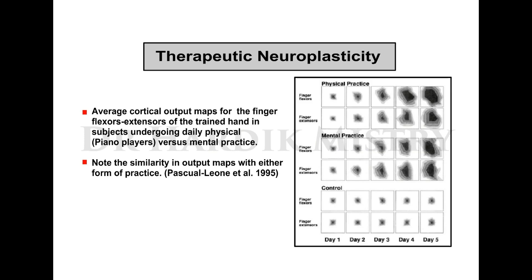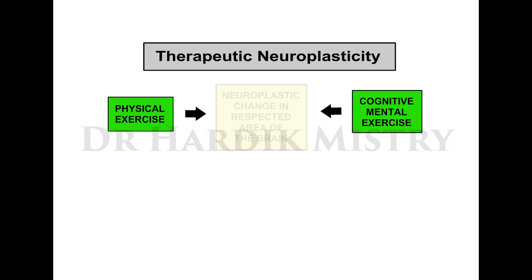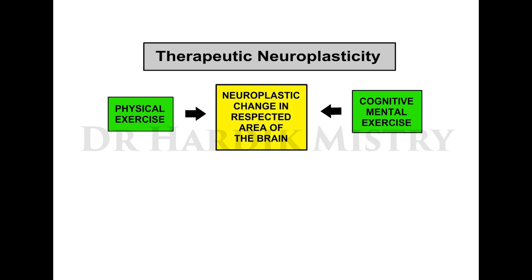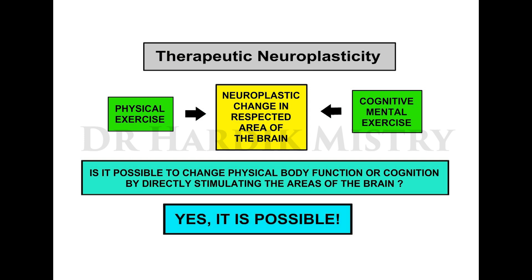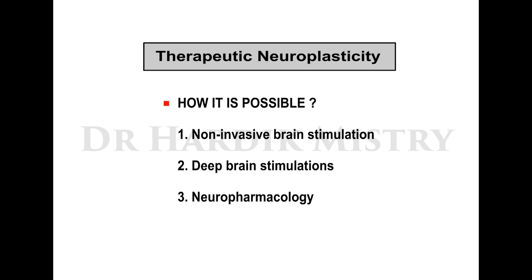Therapeutic neuroplasticity: cortical output maps for finger flexors and extensors of a trained hand in subjects undergoing daily physical versus mental practice show notable similarity. This study demonstrated that both physical exercise and cognitive/mental exercise induce neuroplastic changes in the respective brain areas. It is possible to change physical body function or cognition by directly stimulating brain areas through non-invasive brain stimulation, deep brain stimulation, and neuropharmacology.